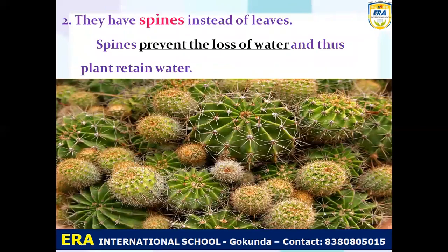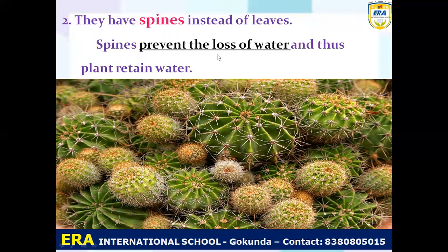The second feature is that desert plants have spines — you can use the word thorn instead of leaves. Desert plants do not have leaves but they have thorns. These spines or thorns prevent the loss of water, so the plants retain water. The thorns stop the loss of water — this is the second feature.